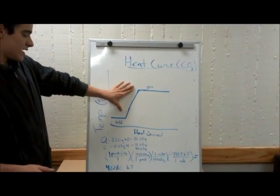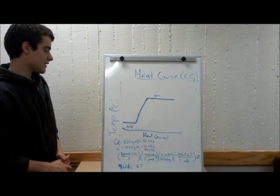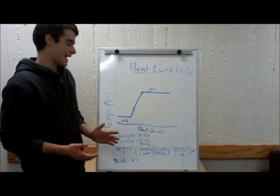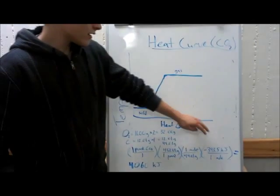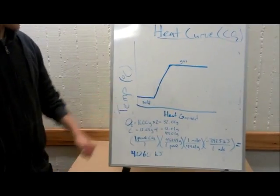And then the specific heat for carbon dioxide gas. So we've got negative 395 kilojoules per mole as the heat of formation.